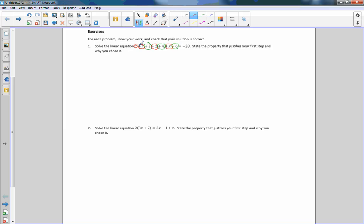So now when I combine these, x + x is 2x, plus another x is 3x, plus another x is 4x. 2 + 4 is 6, 6 + 6 is 12, so that's +12 = -28. So there's our simplified equation, combining like terms. Okay, so now if you remember we have this thing that we use: SAD MAP.